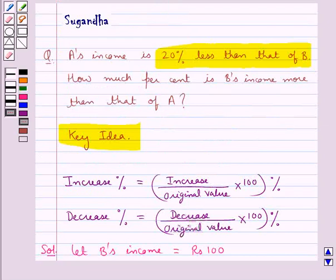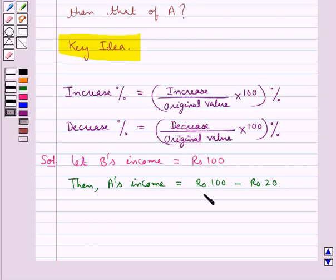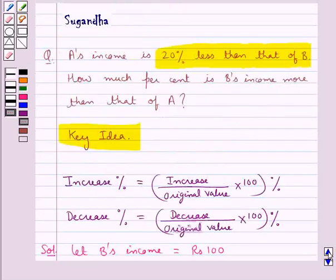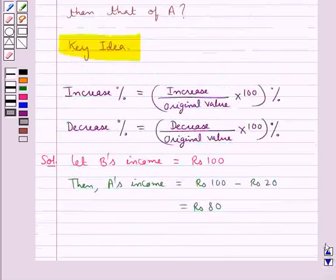As given in the question, A's income is 20% less than that of B. So then, A's income would be equal to Rs. 100 minus Rs. 20, and this is equal to Rs. 80.